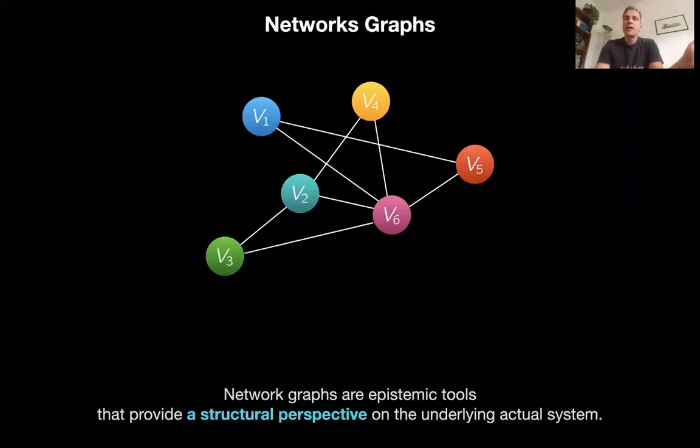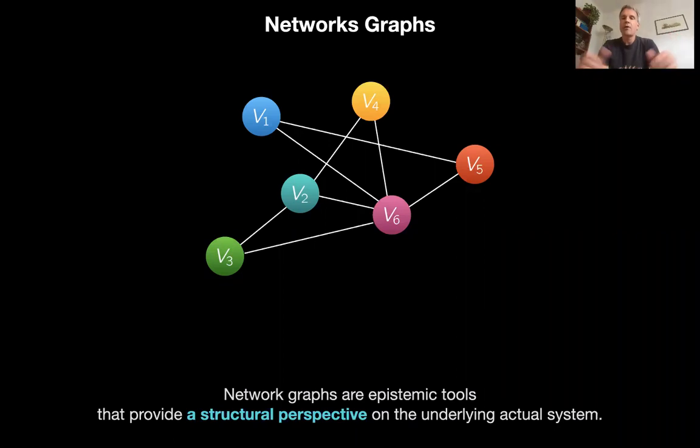So what we did last time is we looked at network analysis, network graphs, graph theory, and I tried to give you a very quick outline of what this structural perspective gives you in terms of understanding the underlying system. Remember when we talked about models as epistemic tool, Tariya Knutila's approach. She said your approach constrains what you can do. So how does the network approach, graph approach, constrain what we can do?